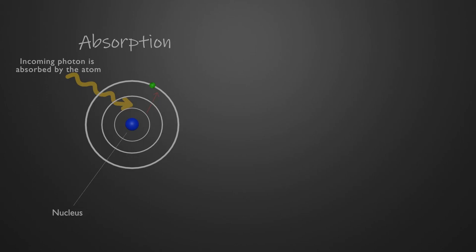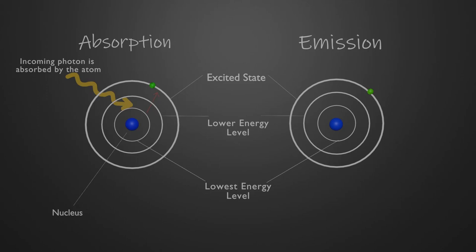If you then zap the right amount of energy into an electron, you can get it to move up a step. This process is called absorption, where the electron absorbs the energy shot into it, and in the process, its energy level is elevated to the next step or